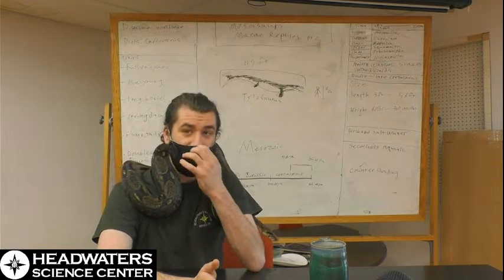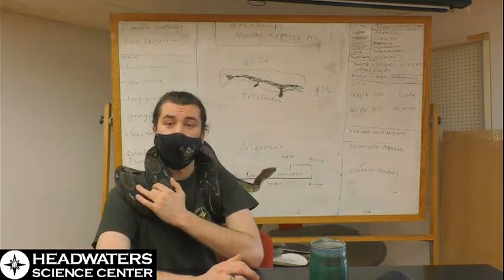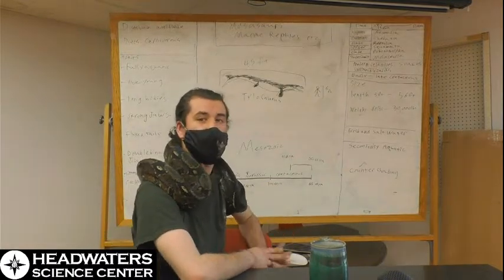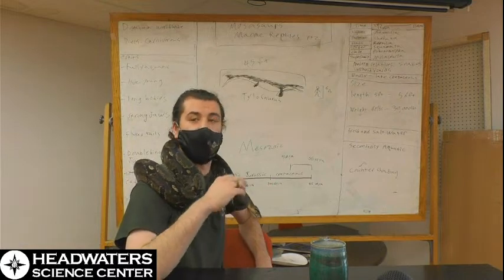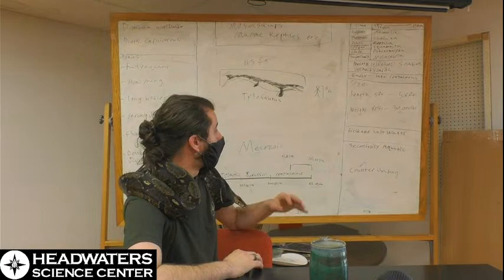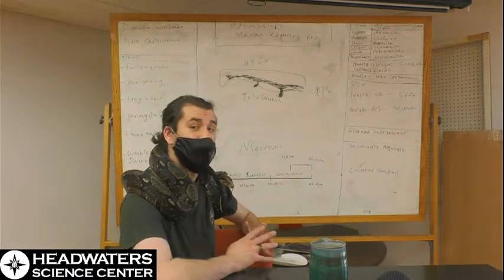Today I grabbed Rusty, our red-tailed boa, because we are going to talk about mosasaurs today. Mosasaurs are a unique type of marine reptile from the mid to late Cretaceous, so from about 92 million years ago to just about 65 million years ago.